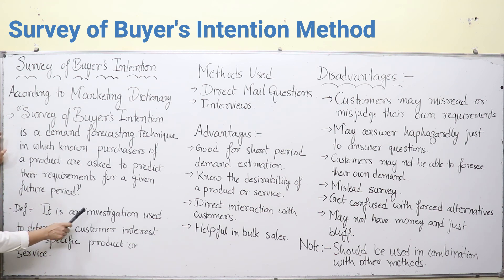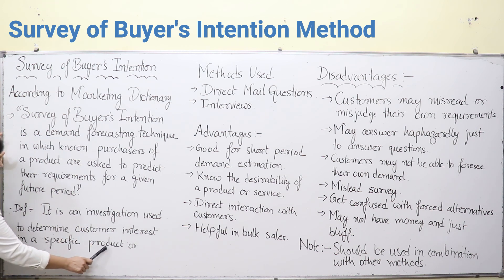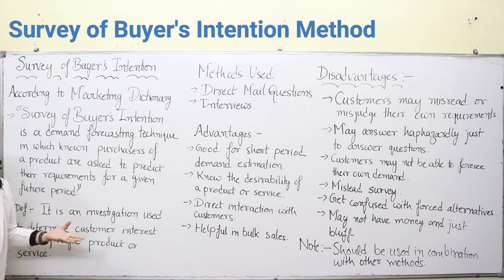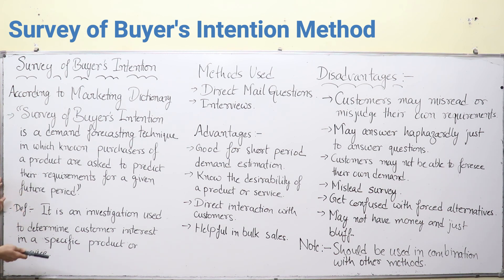The next definition is: it is an investigation used to determine customer interest in a specific product or service. 'Specific product or service' means a product that you are concerned with, or a product which you are producing or intend to market or sell. Suppose I am a producer of cameras — I have a company known for Canon cameras and I am interested in selling those cameras. I will be doing the survey for those cameras; that is my specific product or service.